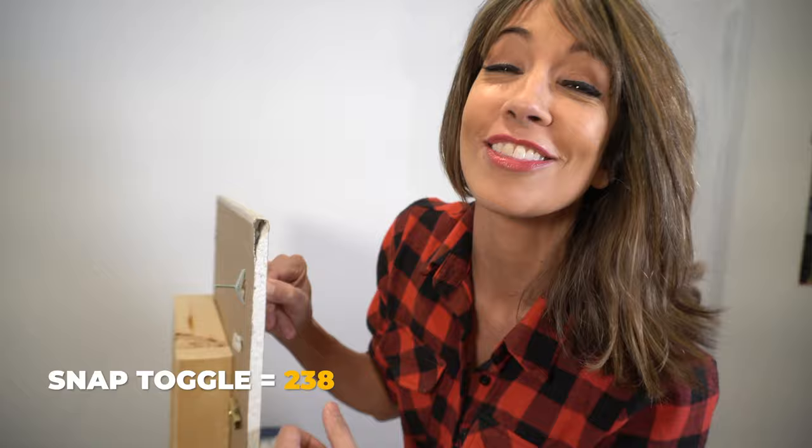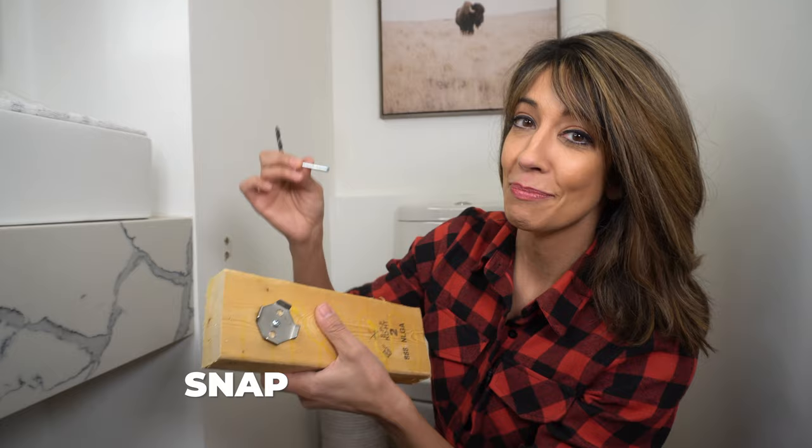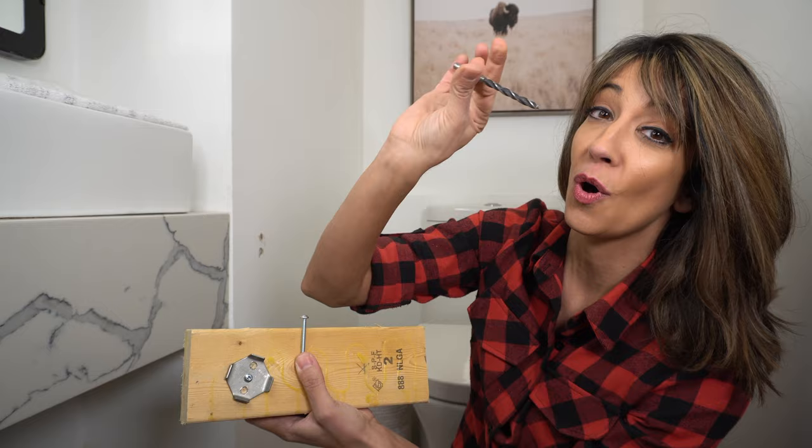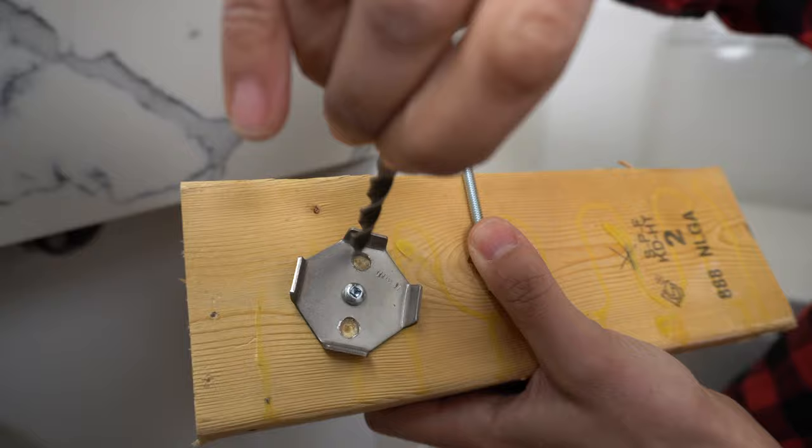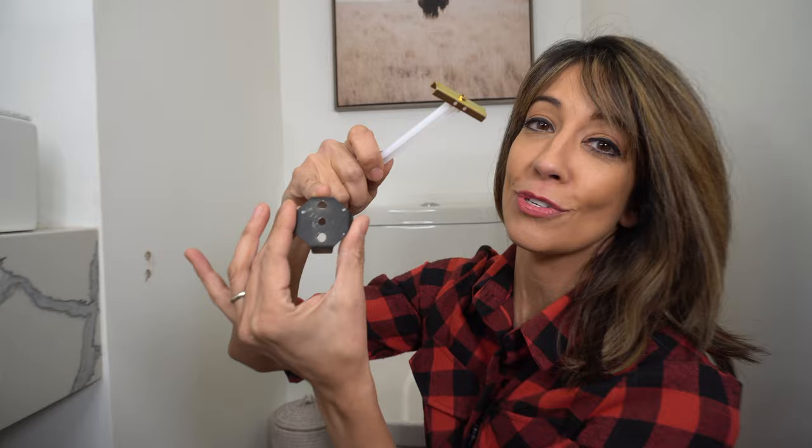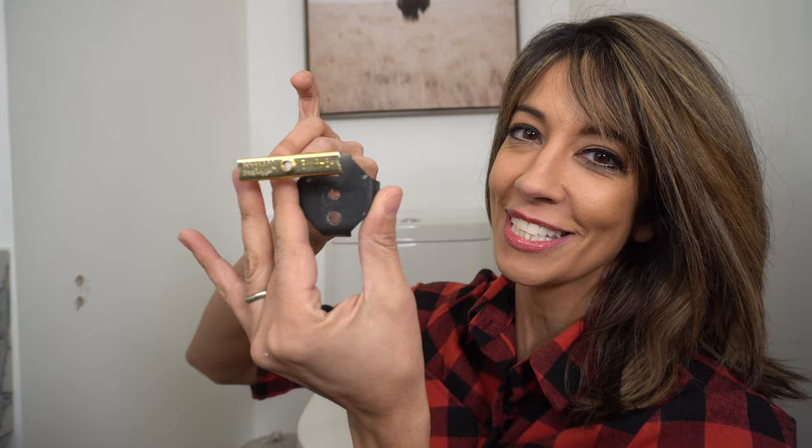So we are back in our bathroom and the best way to install this is with the snap toggles. Because the screws are so thick I actually had to drill out the holes with a metal drill bit. I just screwed it onto a piece of wood and drilled out the holes just a little bit. Now this is our mounting plate and because the holes are so close together you're going to make sure that your snap toggle is installed horizontally so there's room for two of them.